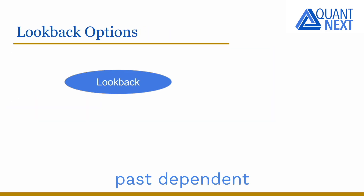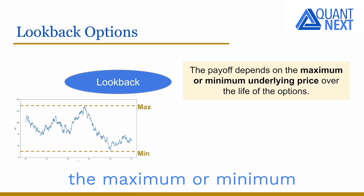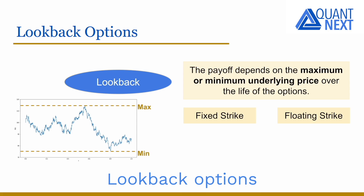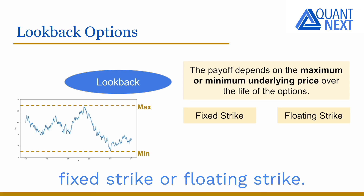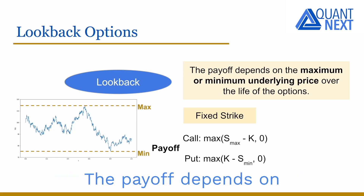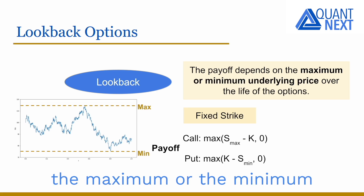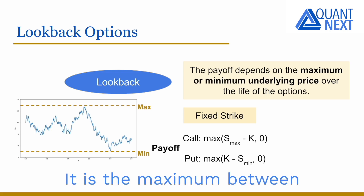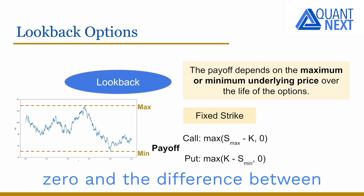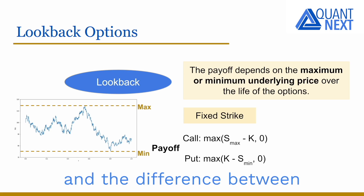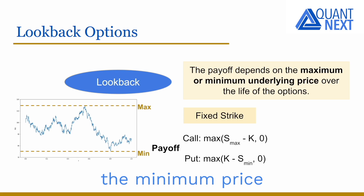Lookback options are path-dependent, like many other types of exotic options. The payoff depends on the maximum or minimum underlying asset price over the life of the option. Lookback options can be either with fixed strike or floating strike. They are fixed strike when the strike price is fixed, and the payoff depends on the difference between the maximum or minimum underlying asset price over the life of the option and the strike price — the maximum between zero and that difference for calls, and using the minimum price for puts.